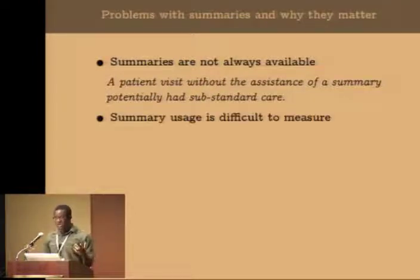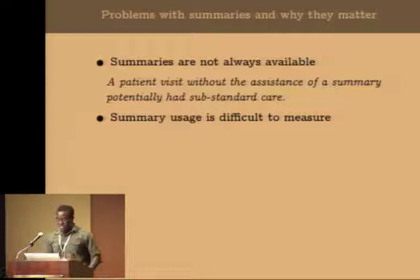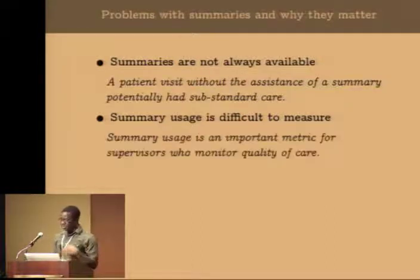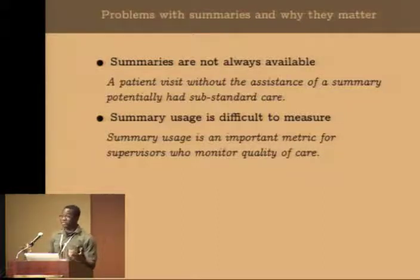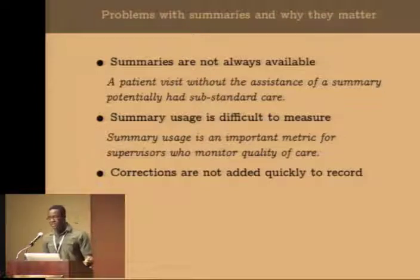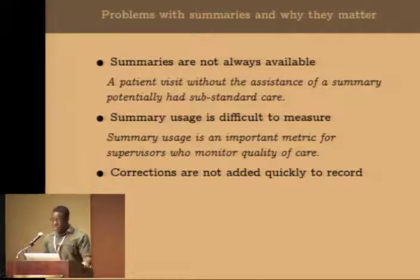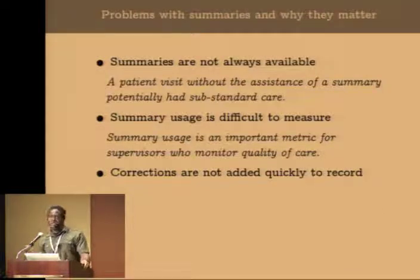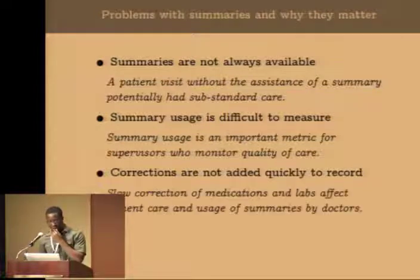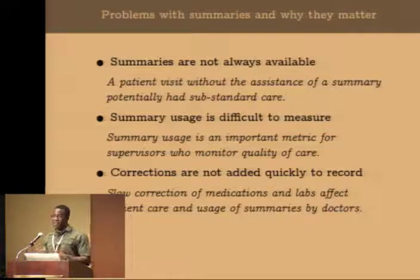Second, summary usage is really hard to measure. Doctors are supposed to put a big slash mark through the summary when they've seen it, but they don't always do so. Usage is a critical metric for supervisors who care about quality of care, so not knowing if doctors are actually looking at summaries is a real problem. Finally, corrections are not quickly added to the patient record — doctors are supposed to correct discrepancies on the summary, but those corrections take a long time before being applied to the electronic medical record, which can affect patient care and summary usage.